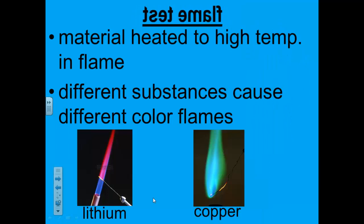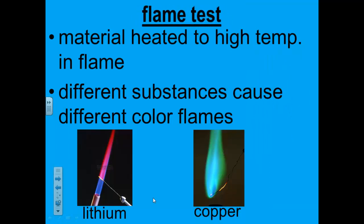Sometimes scientists use flame tests to identify a substance. In a flame test, a material is heated to high temperatures in a flame. Different substances will cause the flame to have different colors. When these flames are studied closely with laboratory equipment, the substances can be identified.